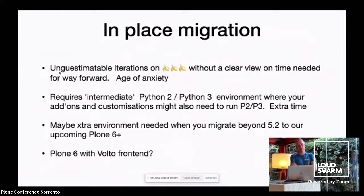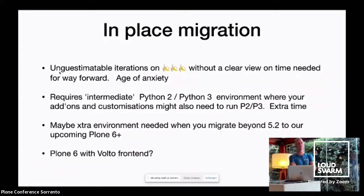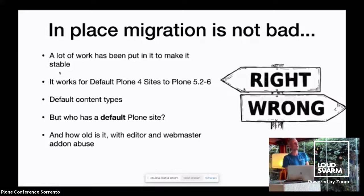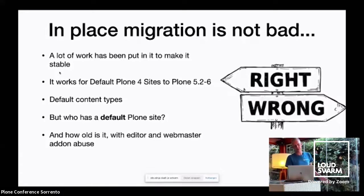Another drawback is that you require an intermediate Python 2/Python 3 compatible environment in Plone 5.2 to be able to run ZODB convert. So you have to have your code Python 2/Python 3 compatible, and then when it's done, you can strip away all that compatibility stuff. In-place migration has had a lot of work to make it stable; it works for default Plone sites and default content types. But who here has a default Plone site? And how old is it? And which editors and webmasters abused it with add-ons?